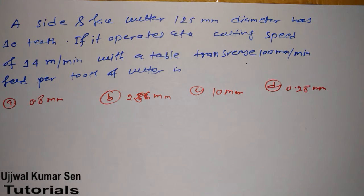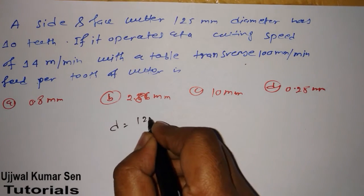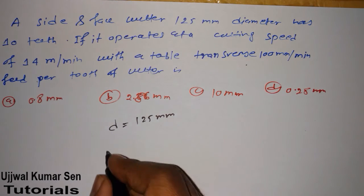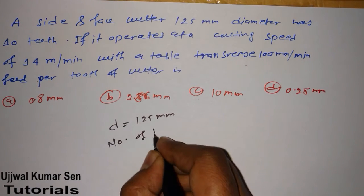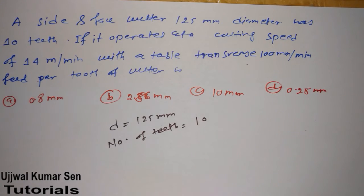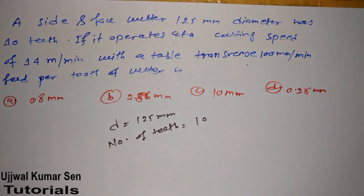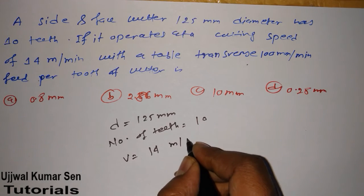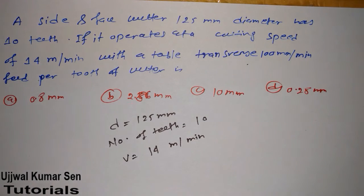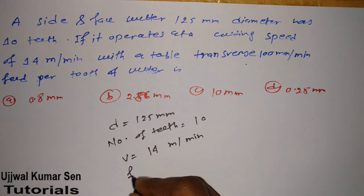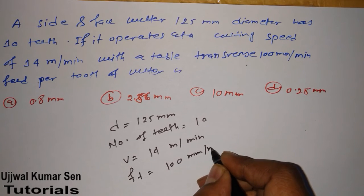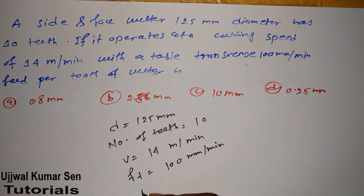A side and face cutter has diameter 125 mm and has 10 teeth. If it operates at a cutting speed V equals 14 meters per minute with a table transverse ft equals 100 mm per minute, we have to find out feed per tooth.